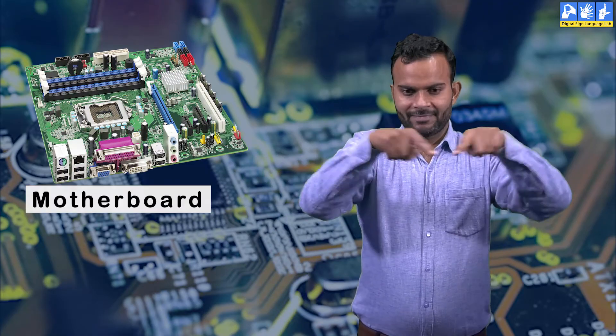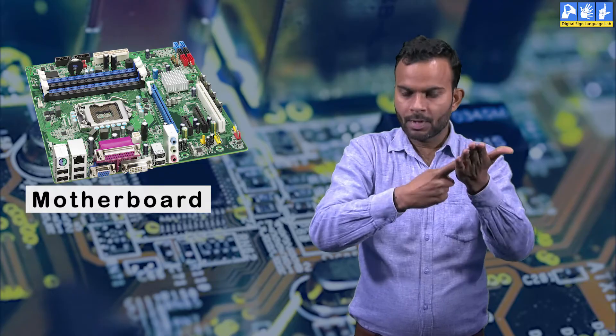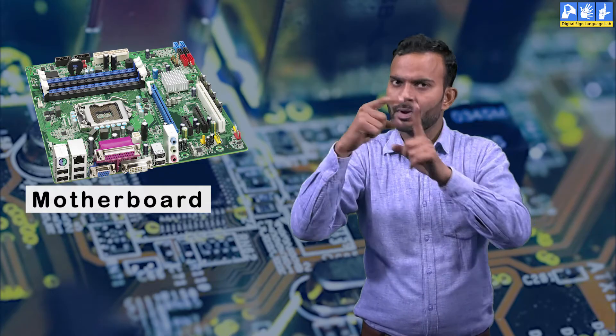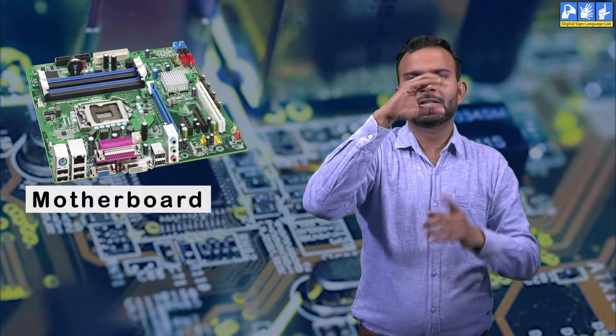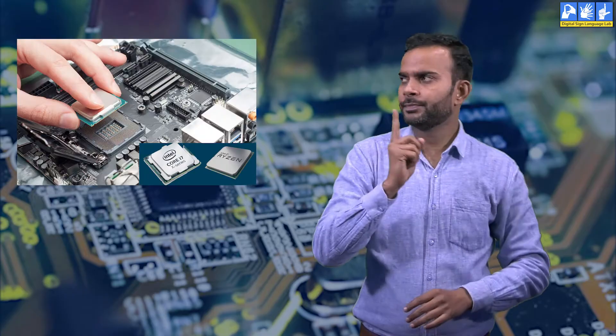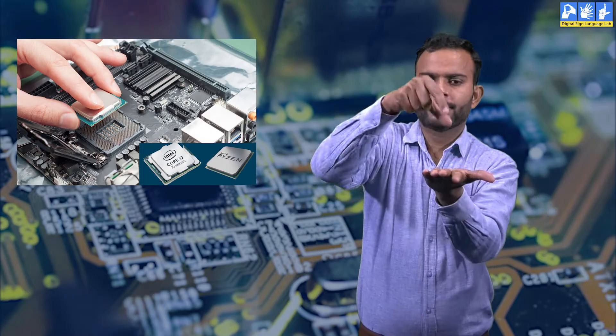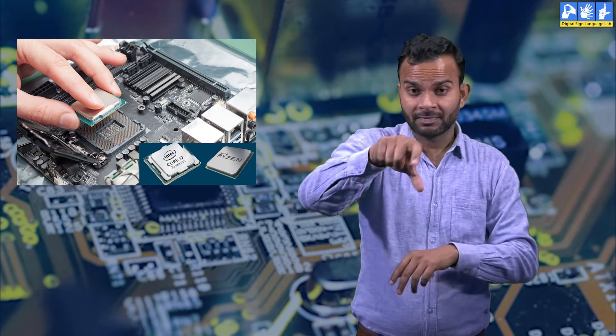It controls all the functions of the computer. The brain of computer can be found in motherboard of CPU which looks like this and manages controlling the functioning of computer from processing and storing the data.